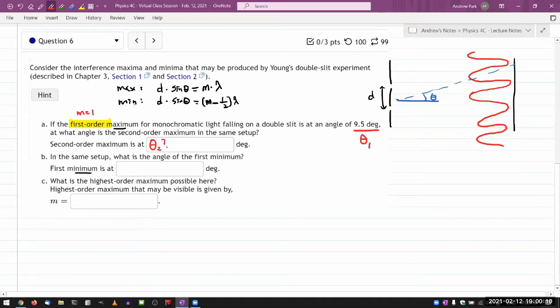So let me just write down a few expressions. So it looks like the question hasn't given me any value of D or lambda, but I'm hoping that I don't actually need those values. So in part A, the information that I've been given amounts to D, some unknown value, times sine of theta one. So this equation, and they gave me the order, M equals one, so that's equal to one times the wavelength lambda.